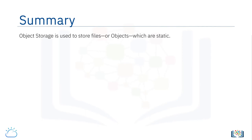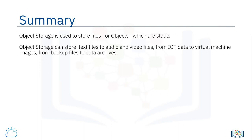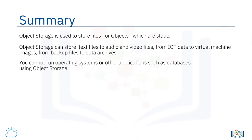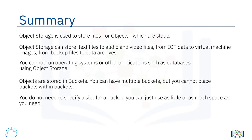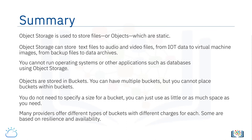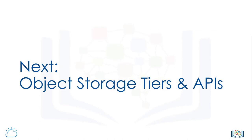To summarize: object storage is used to store files or objects which are static. The data can be anything from text files to audio and video files, from IoT data to virtual machine images, from backup files to data archives. You cannot run operating systems or other applications such as databases using object storage. Objects are stored in buckets — you can have multiple buckets, but you cannot place buckets within buckets. You do not need to specify a size for a bucket; you can use as little or as much space as you need. Many providers offer different types of buckets with different charges, based on resilience, availability, or the frequency at which objects are accessed. In the next video, we'll be diving into object storage data tiers and object storage APIs.